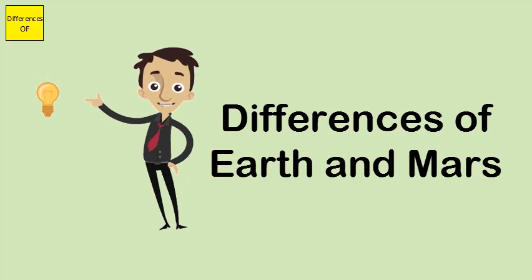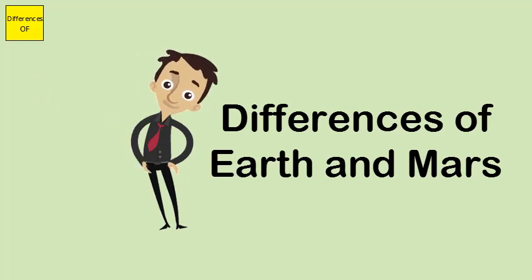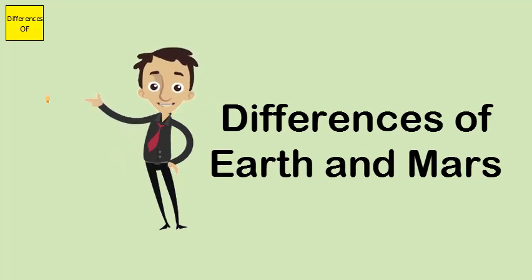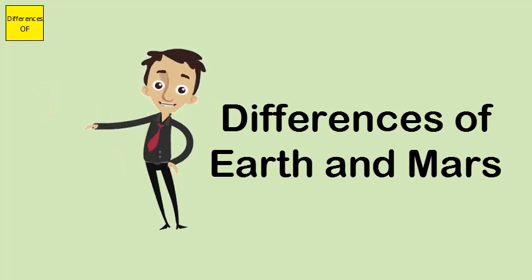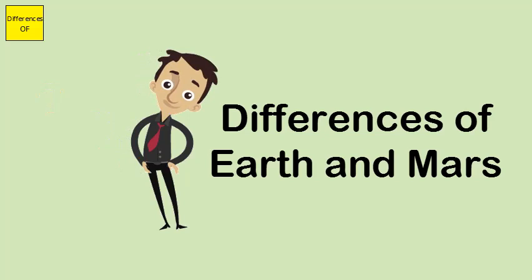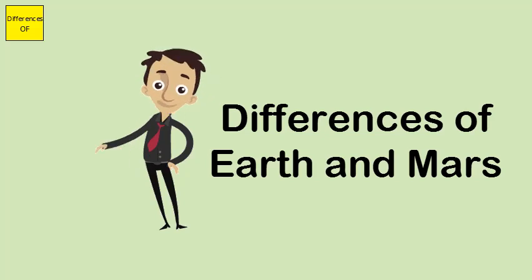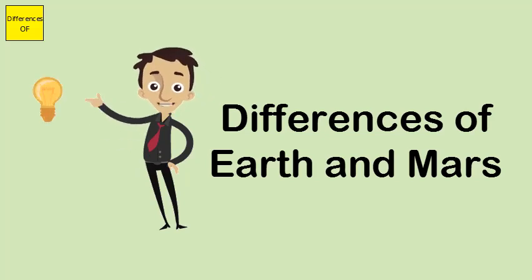Earth has a shifting crust which continually changes the landforms and replenishes the landscape. Mars has a surface which never changes, and ancient meteorite scars from millions of years ago can still be seen today.